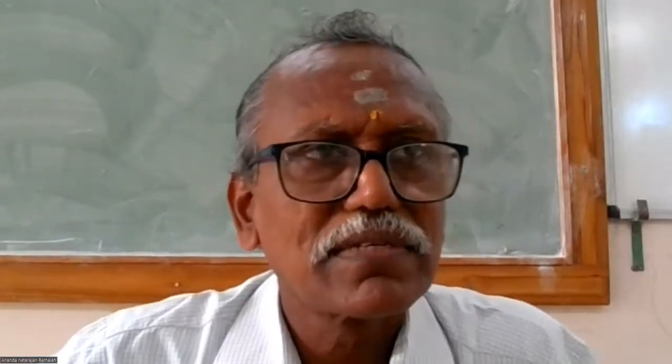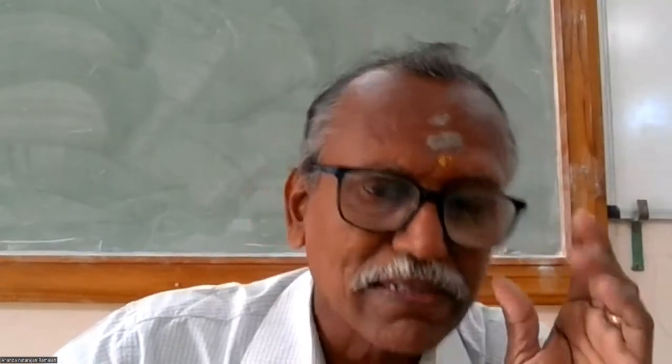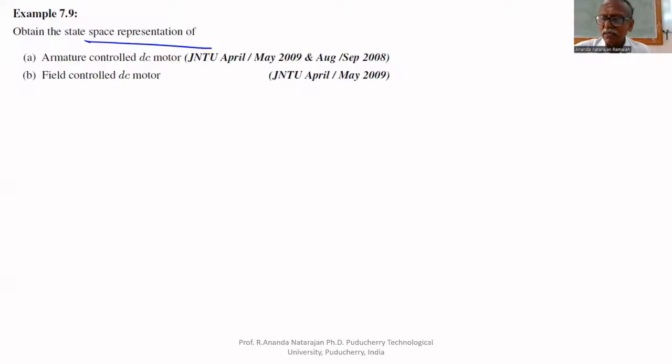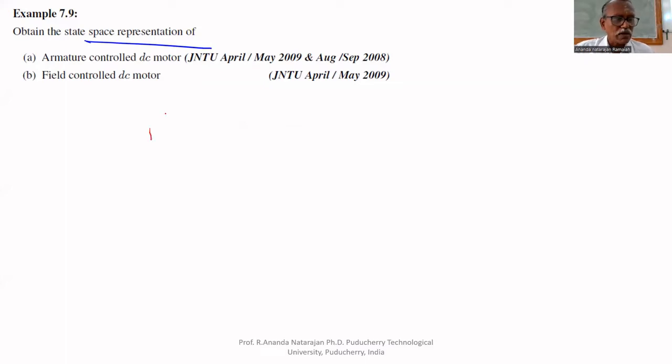Good morning to all. Yesterday we have seen how to obtain the state space model of mechanical systems and electrical systems. Today we are going to see the mathematical model of armature controlled DC motor and field controlled DC motor — specifically, how to obtain the state space representation of both.